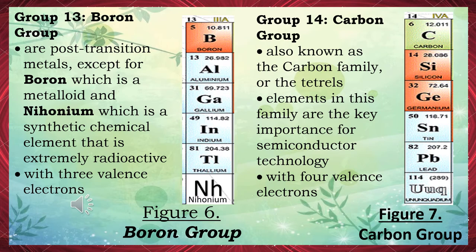Group 13 — Boron group: post-transition metals, except for boron which is a metalloid and nihonium which is a synthetic chemical element that is extremely radioactive, with three valence electrons. Boron group members: boron, aluminum, gallium, indium, thallium, nihonium.